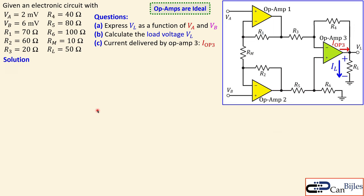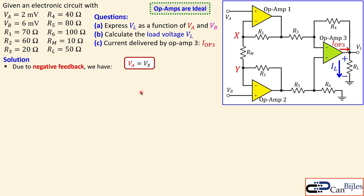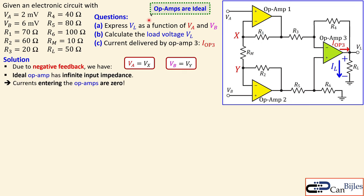Now let's look at our solutions. Due to negative feedback, at node X we have Vx equal to Va, because op-amp one has negative feedback. Op-amp two also has negative feedback, so Vy is exactly equal to Vb. For ideal op-amps, the input impedance is infinite, meaning the current entering the op-amp terminals is zero. This means we have an open circuit between the two input terminals, which is handy for our analysis.